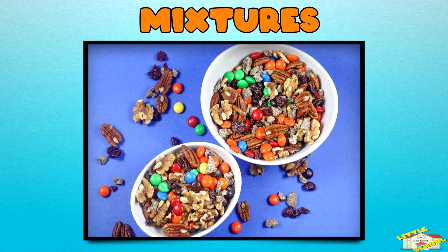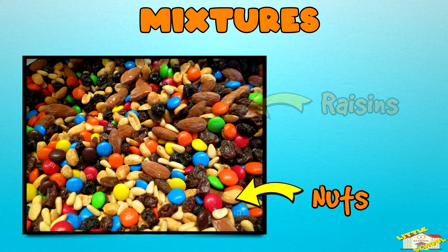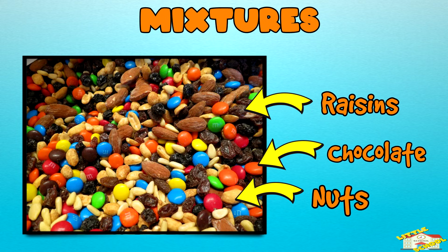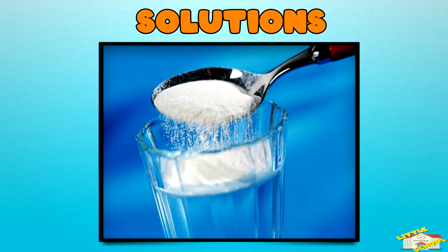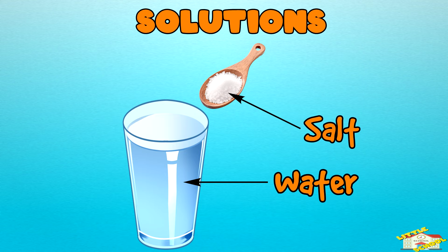Another example is trail mix. The nuts, raisins, and chocolate pieces are all mixed up, but you can still tell them apart and pick them out one by one. A solution is also made by combining two or more things.